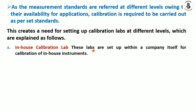For example, if you are continuously using vernier calipers, micrometers, and height gauges, all those instruments need to be calibrated regularly, and this facility is provided in-house. There are some advantages and also some limitations to this approach. These in-house labs are set up within the company itself for calibration of regular instruments used on-site.